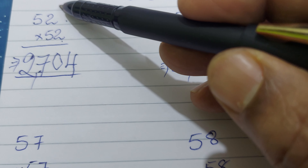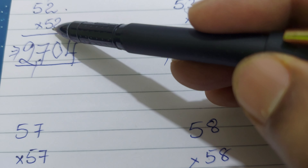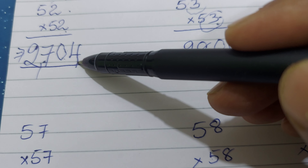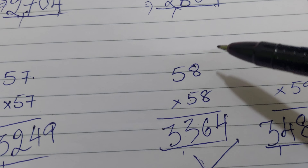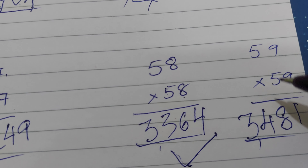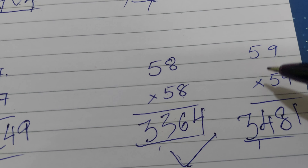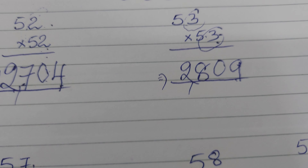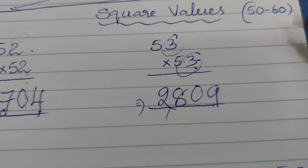This is the easy technique. Let me revise once more. Multiply the unit digit by itself: 2 into 2 gives 04, add to 25 → 27. 3 into 3 gives 09, add to 25 → 28. 7 into 7 gives 49, add to 25 → 32. 8 into 8 gives 64, add to 25 → 33. 9 into 9 gives 81, add to 25 → 34. Simple! In this way, within a few seconds, we can find out the square values for numbers 50 to 60.